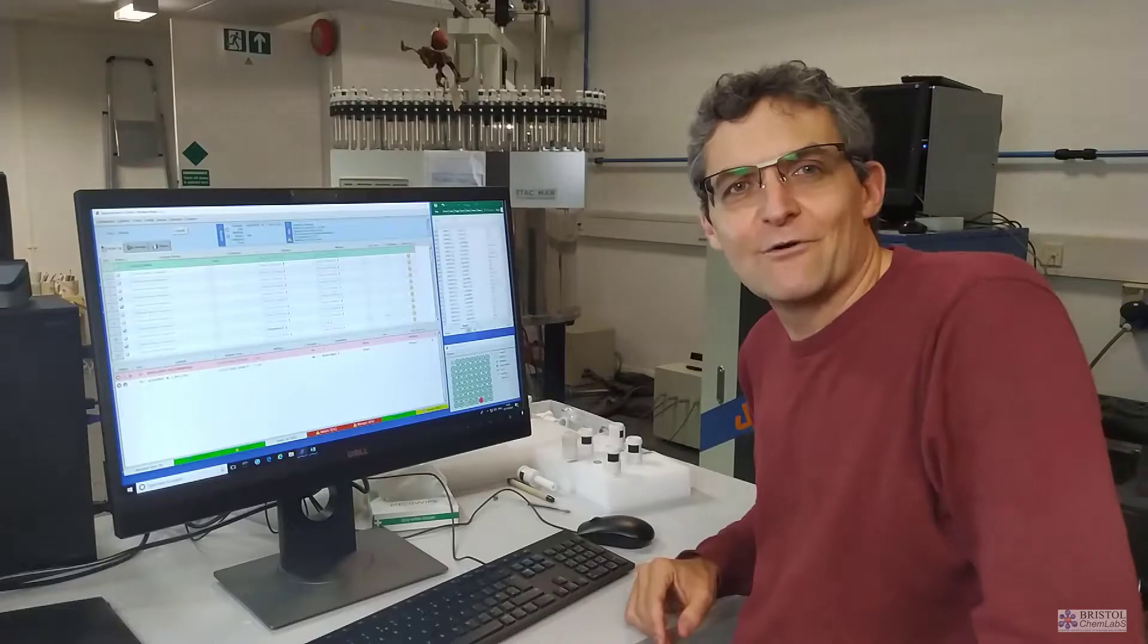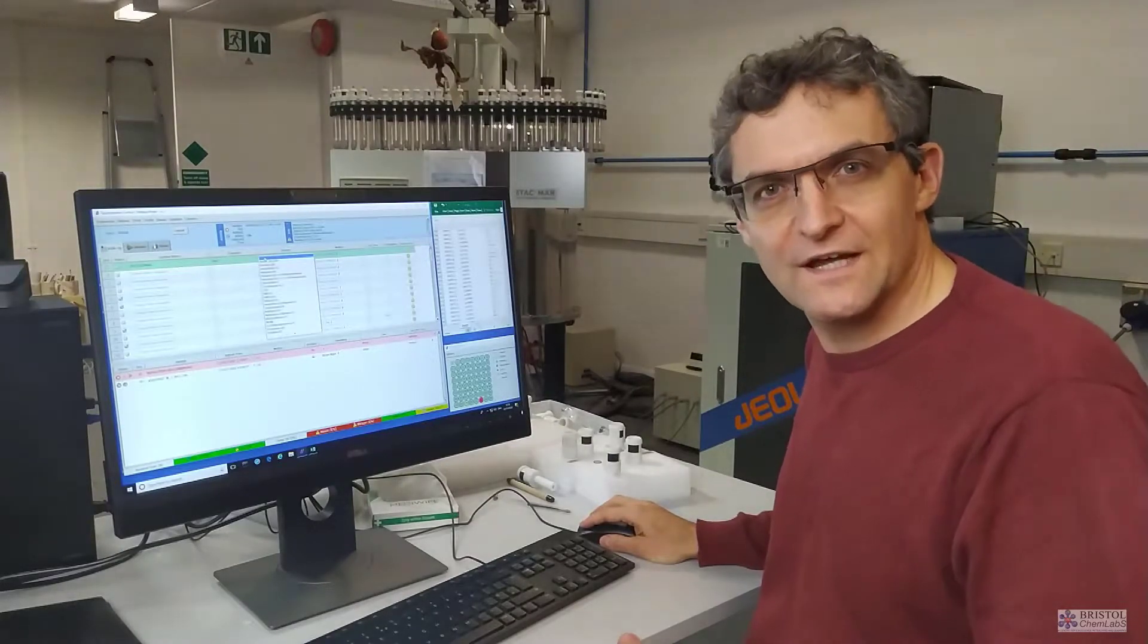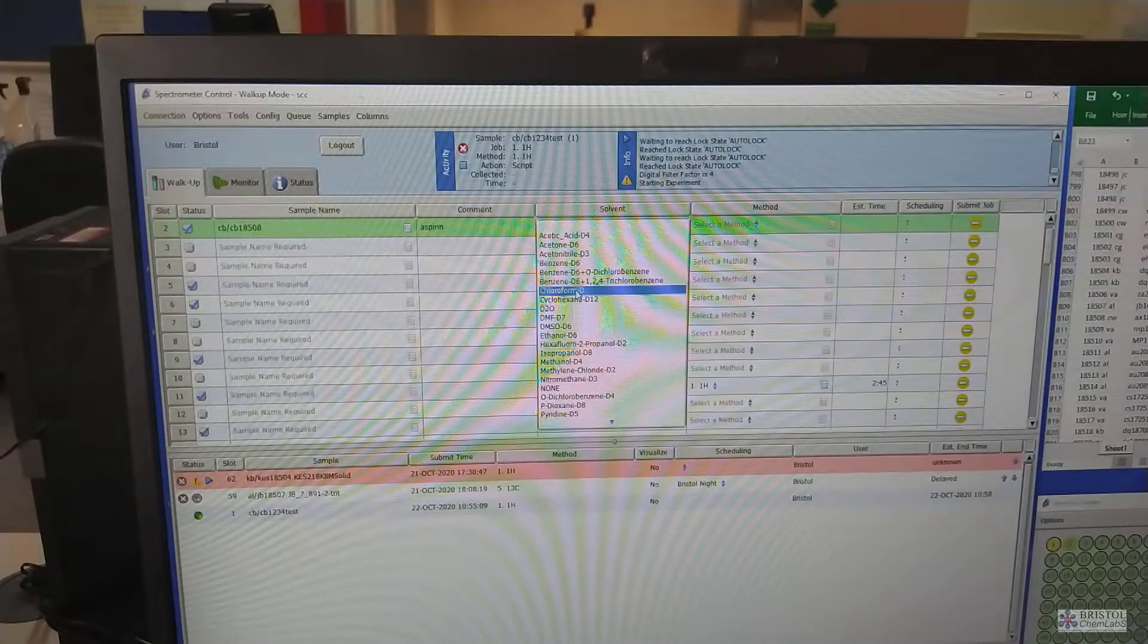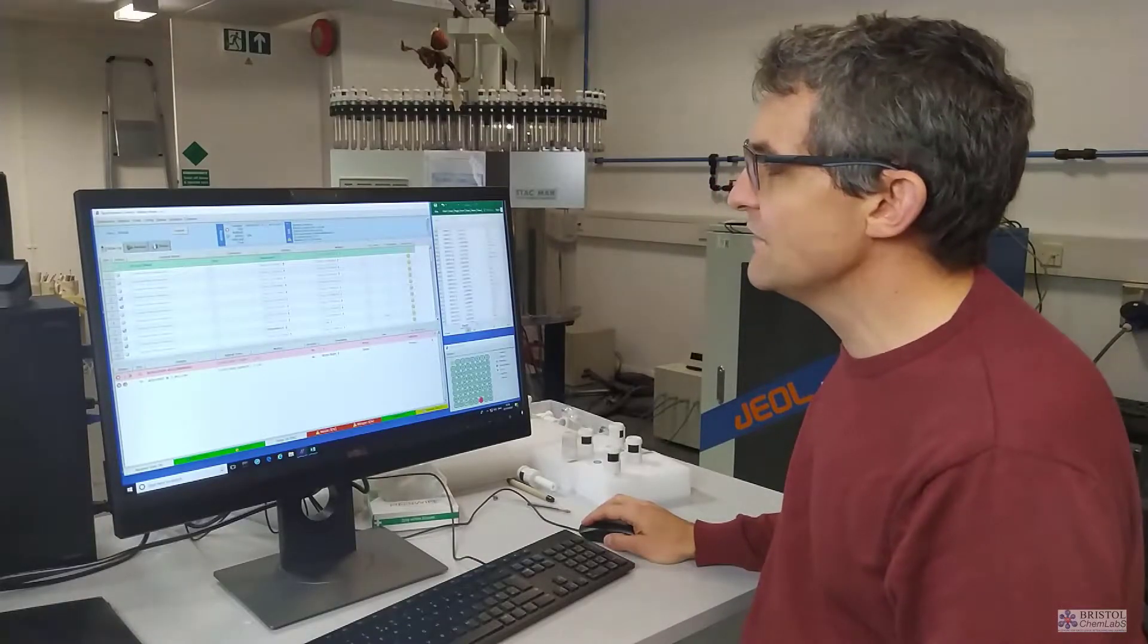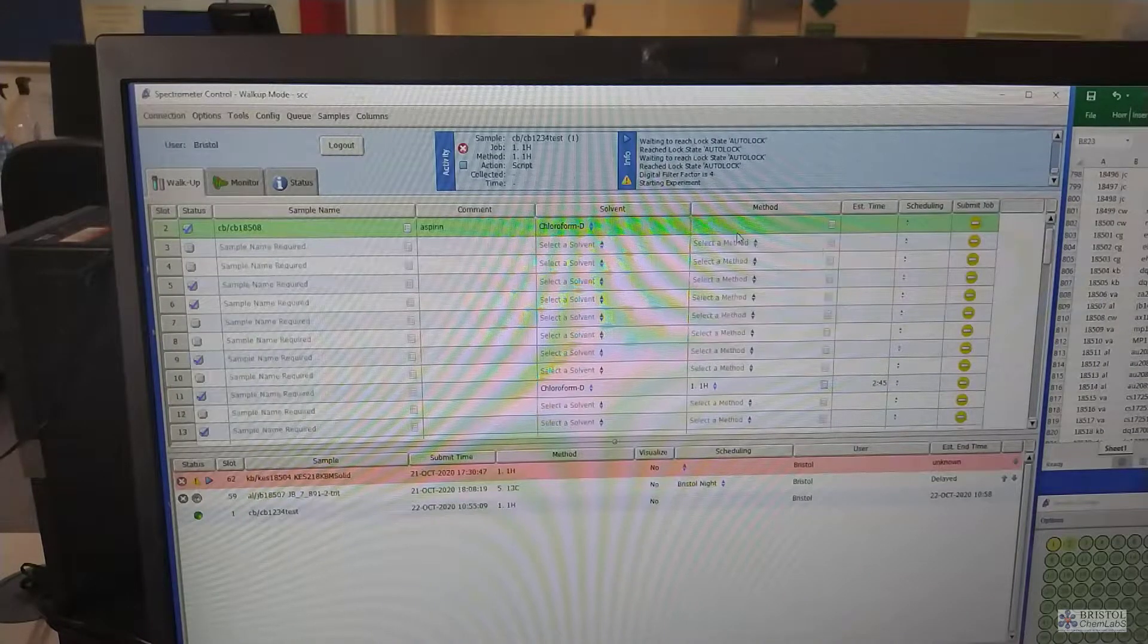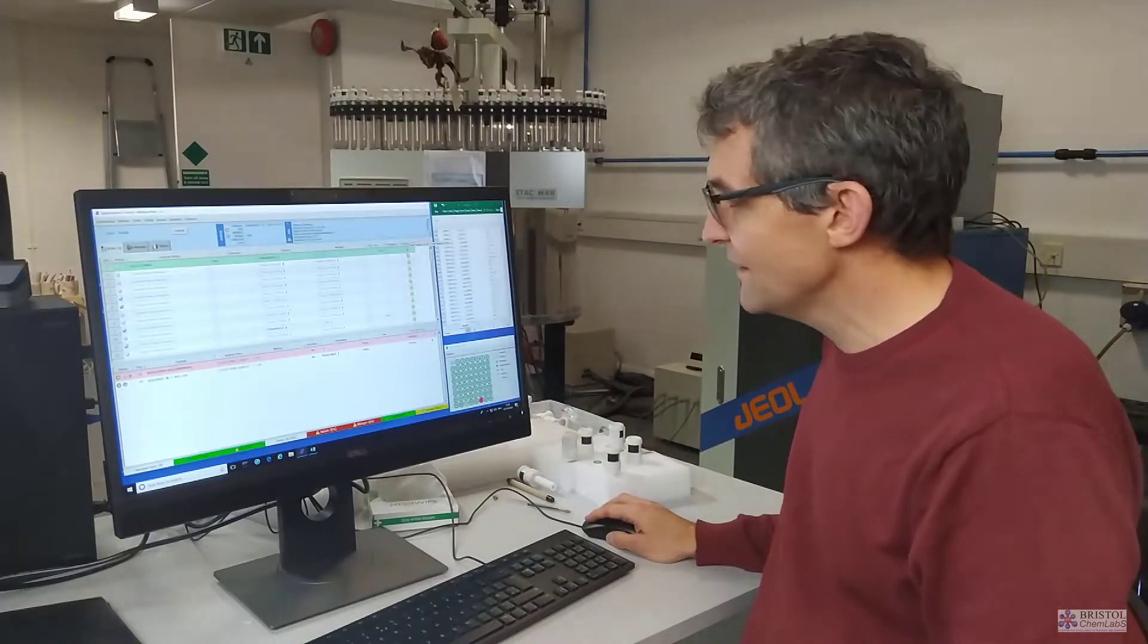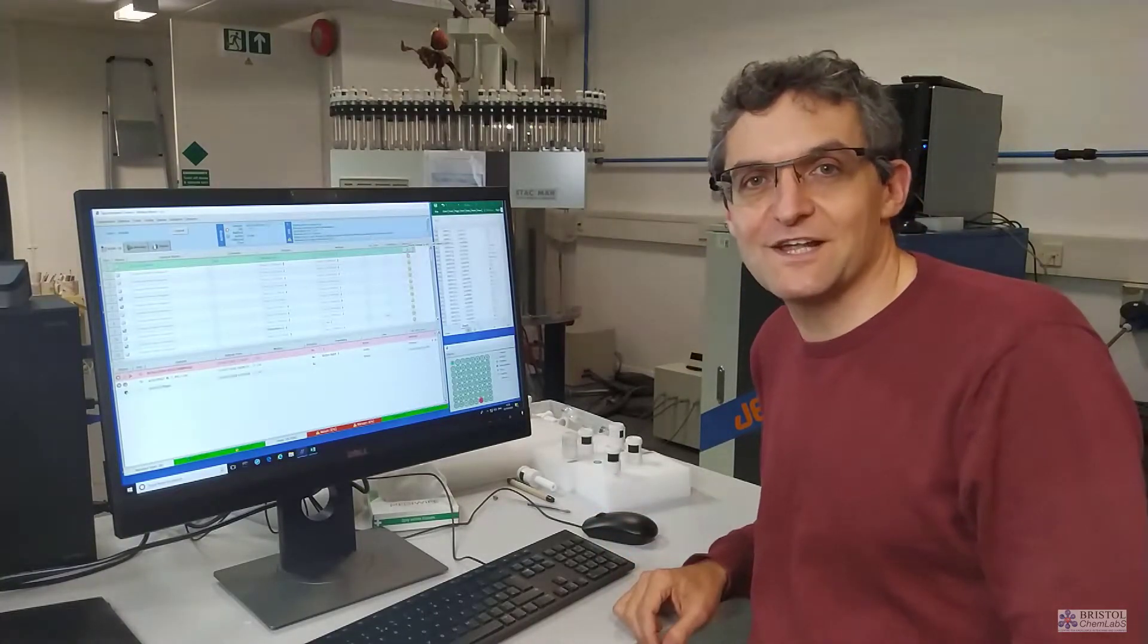When we want to run our NMR spectrum, it's really simple. What we need to do is come to the computer, tell the computer what the solvent is that our sample is dissolved up in. So in this case, it's dissolved in deuterated chloroform. And then what experiment we want to run. So a proton NMR spectrum, or a hydrogen NMR. And then it calculates the experiment time and we push it back. It's as simple as that.